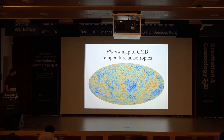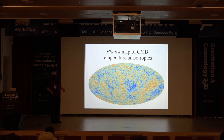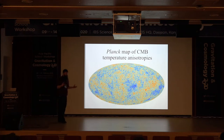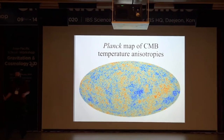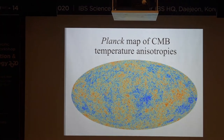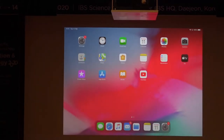If you look at this map and ask how you want to deal with this kind of information — the Planck map has a very large number of pixels, of order tens of millions — that's a bit unwieldy. So we might want to compress the information and describe it in some other way. The most convenient way of doing that is the angular power spectrum, which I'm going to introduce now.